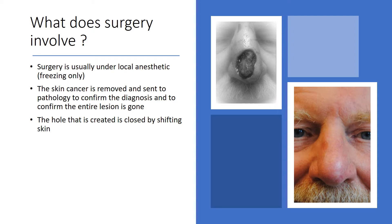Surgery is most often done under local anesthetic with freezing only. The skin cancer is removed and sent to pathology to confirm the diagnosis and to confirm the entire lesion is gone. The hole that is created is closed by shifting skin from different areas. This gentleman had a basal cell carcinoma of the nose. Because of the location and extent of the lesion, his reconstruction was delayed for four or five days until we could be 100% certain that all of the lesion was treated and removed. He had reconstruction of his nose using a piece of skin from the forehead, known as a forehead flap. This is his final result in the bottom picture.